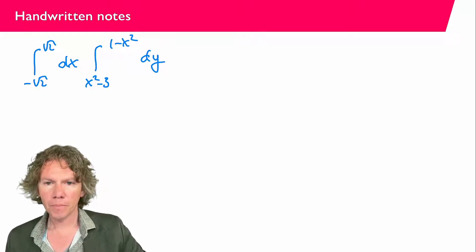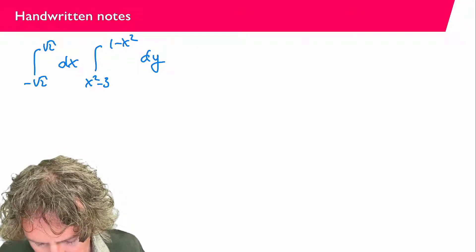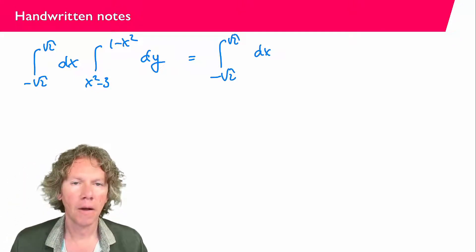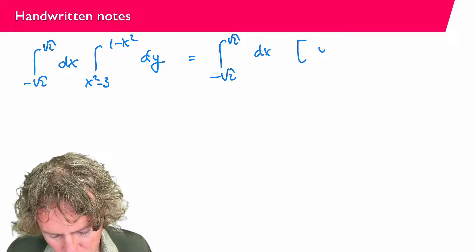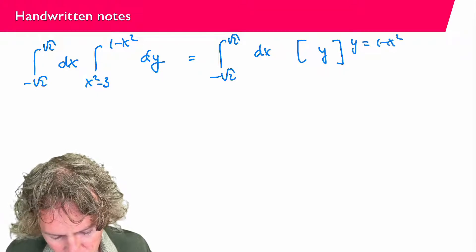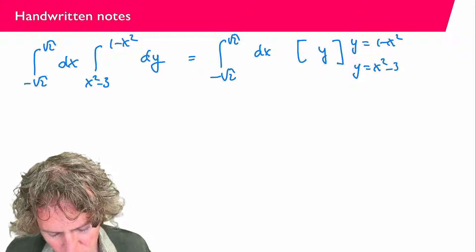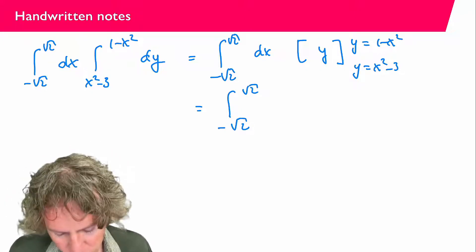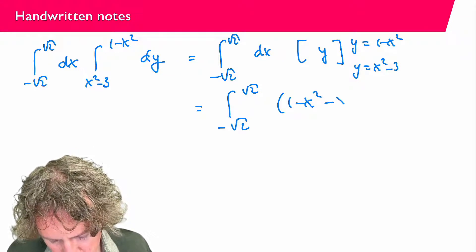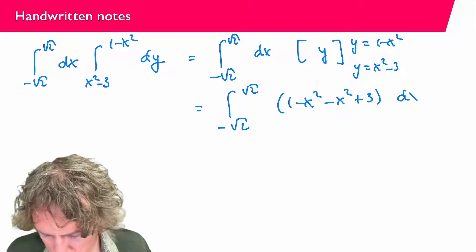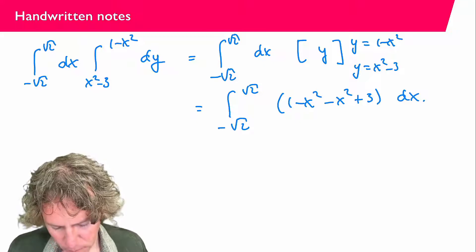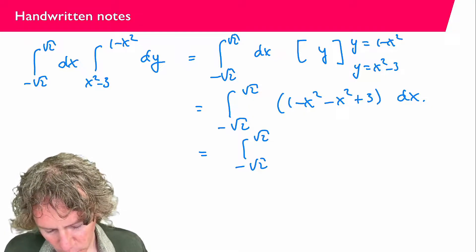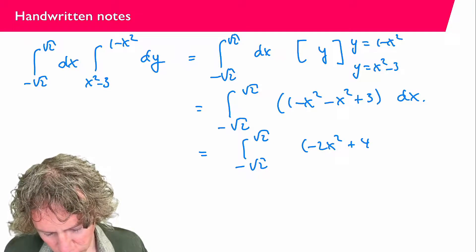Let's first do the integral in y, keeping the x limits from minus square root of 2 to square root of 2 dx. The antiderivative in y is just y, evaluated between y equals 1 minus x squared and y equals x squared minus 3. Plugging in those values gives the integral from minus square root of 2 to square root of 2 of 1 minus x squared minus x squared plus 3 dx, which simplifies to the integral of minus 2x squared plus 4 dx.